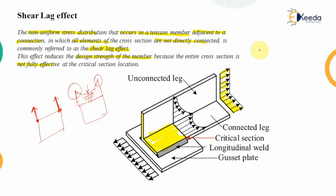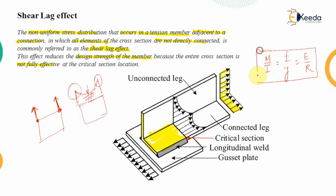When we apply the simple bending theory — the equation M/I = F/Y = E/R from the strength of materials — a basic assumption is that the stress is distributed uniformly. If the stress is not distributed uniformly, as we see in the case of the shear lag effect, then this equation cannot be applied.